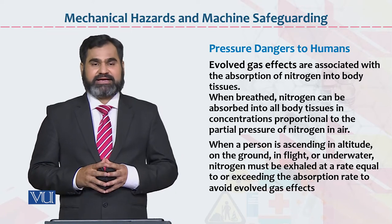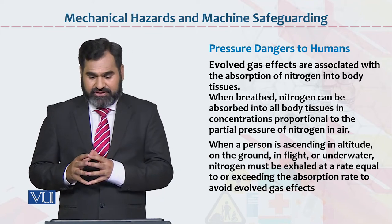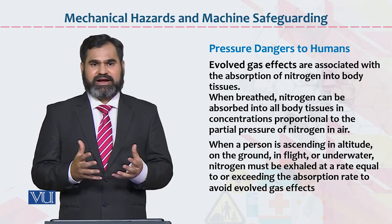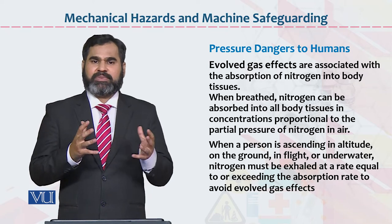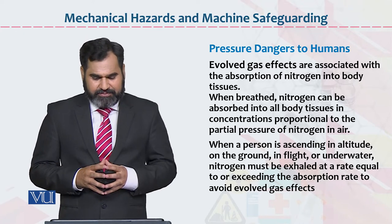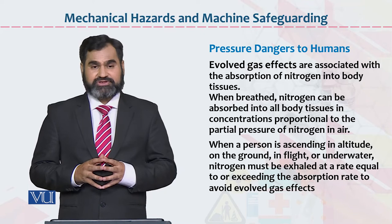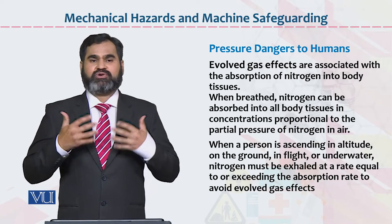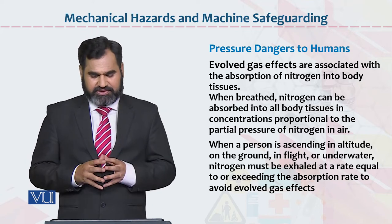Pressure dangerous to human में फर्दर अगर देखा जाए: gas effects are associated with the absorption of nitrogen into body tissues. हमारी body की specific composition है जिसमें oxygen, carbon dioxide involved है. जब हम बाहर से inhale करेंगे तो other gases हमारे مختلف organs और body को effect कर सकती हैं. When you breathe, nitrogen can be absorbed into all body tissues in concentration proportion to the partial pressure of nitrogen in air. Nitrogen will move toward your body, tissues को effect कर सकती है, यह और भी किसी किस्म की problem का باعث بن سکتی ہے.